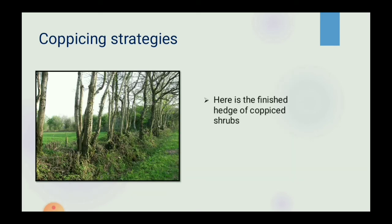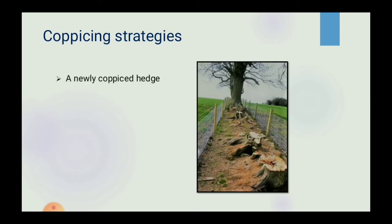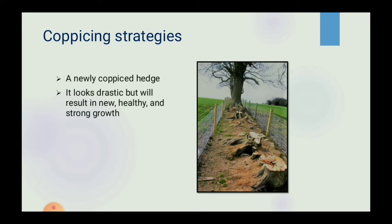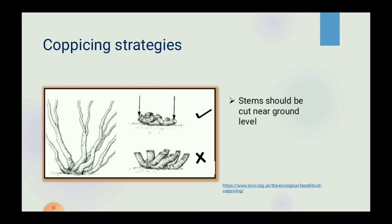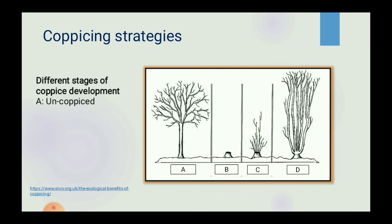Here is the finished hedge of the coppiced shrubs. A newly coppiced hedge looks drastic but it will result in new, healthy and strong growth. The stems should be cut near to the ground level. The first picture is marked as correct whereas the second is marked incorrect because the shrubs are coppiced too high, resulting in gap formation at the base of the hedge. The picture shows A as the un-coppiced shrub, B as newly coppiced, C as new growth from the coppiced shrub, and D as mature coppiced.